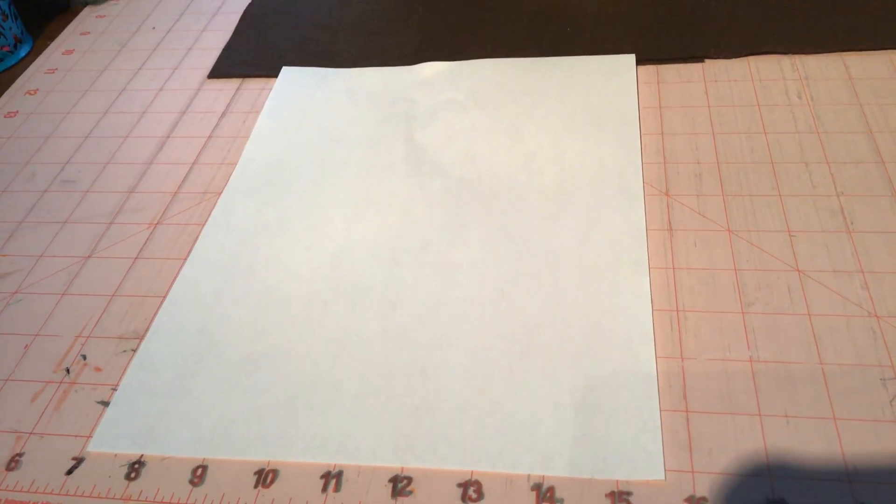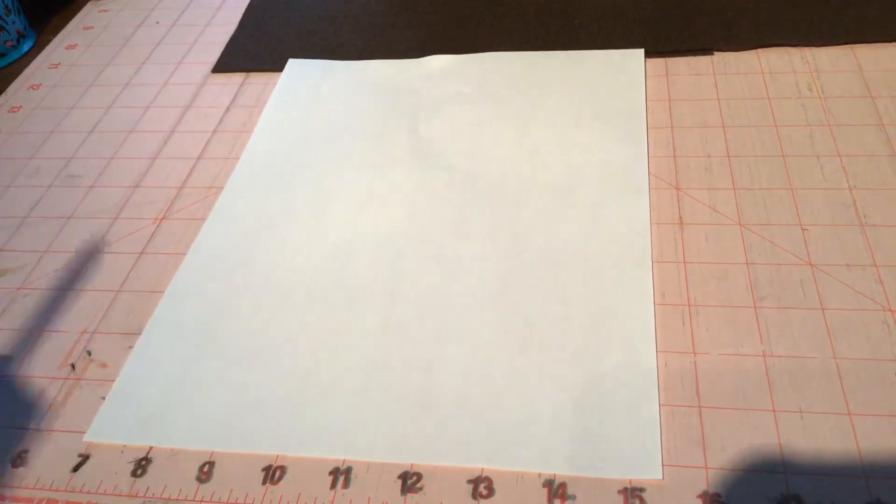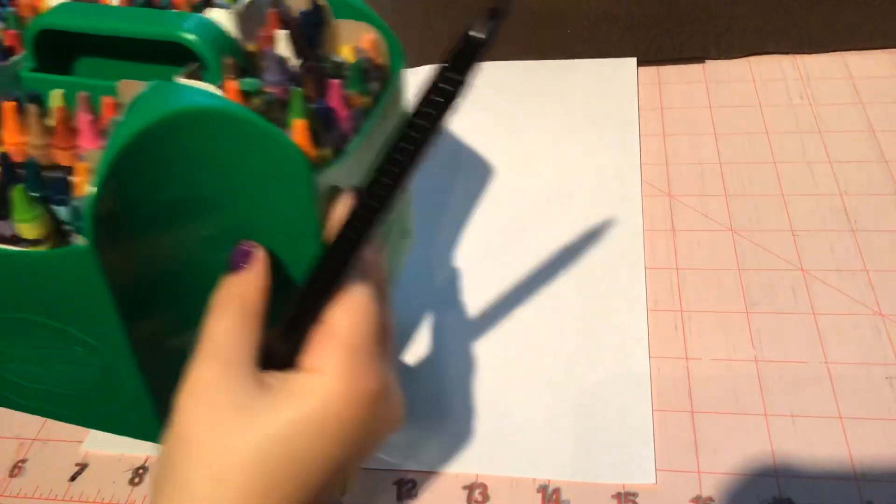This is how to draw a sunflower. You'll need a white piece of paper, a black marker, and a box of crayons.